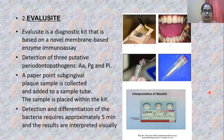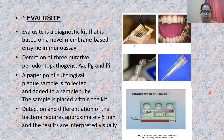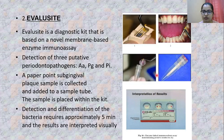Next is Evalucide, a diagnostic kit based on a membrane-based enzyme immunoassay. It mainly determines three important periodontopathgens: AA (Actinobacillus actinomycetemcomitans), Porphyromonas gingivalis, and Prevotella intermedius. A paper point is placed in the subgingival area, collected in a vial and subjected to the assay, giving results within five minutes.